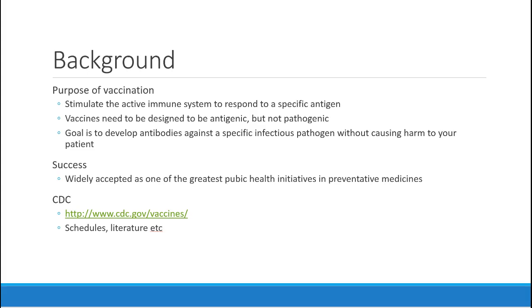We define vaccines as antigenic — meaning they'll give an immune response — but not pathogenic, so they shouldn't provoke any type of disease response in patients. However, this does happen in certain populations and with certain vaccines. Our goal is to develop antibodies against a specific infectious pathogen without causing any harm. Vaccines are one of the most successful public health initiatives in history. Some people say vaccines and clean running water are probably the two things that keep our population the healthiest, and I would agree.